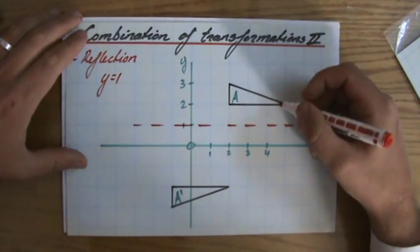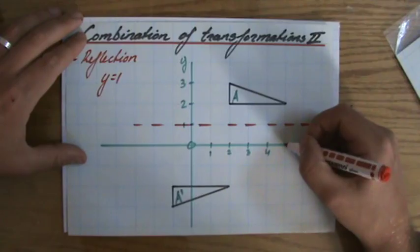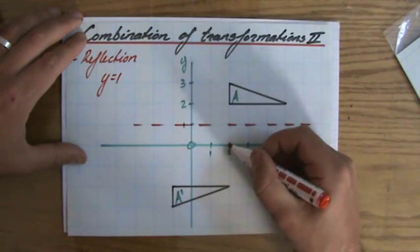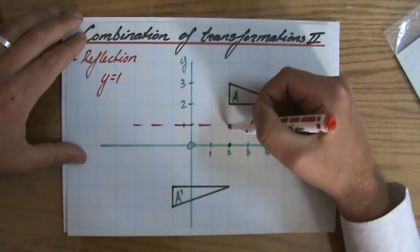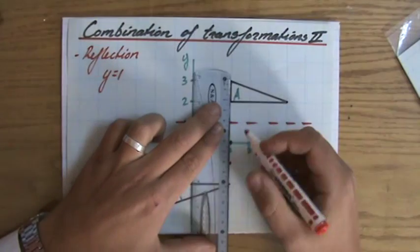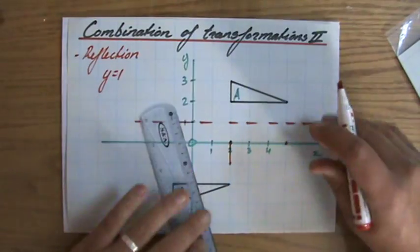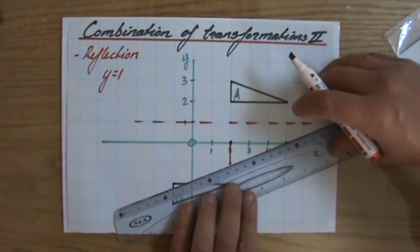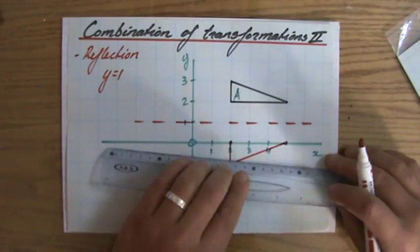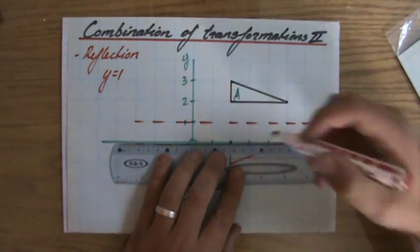Now let me just reflect it. So that point will be there, that point will be there, and that point will be to over there. And as you can see, after that reflection in the mirror line, or horizontal mirror line, my figure has been flipped.